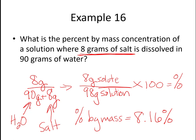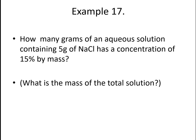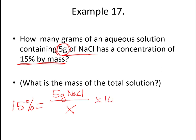So let's do another problem. How many grams of an aqueous solution containing 5 grams of sodium chloride has a concentration of 15% by mass? Okay. So in this problem, we are going to be kind of working backwards because we've been given our 15%. That is going to equal our 5 grams of sodium chloride. And we don't know what our total mass of solution is, but we know we have to multiply by 100 at the end.